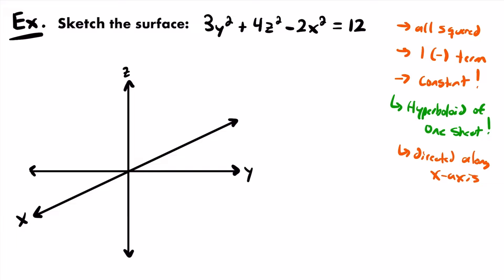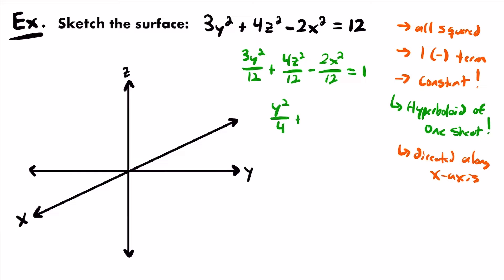To sketch this hyperboloid of 1 sheet, we get the equation in standard form by dividing both sides by 12: 3y²/12 + 4z²/12 - 2x²/12 = 1. Simplifying: 3/12 = 1/4, 4/12 = 1/3, and 2/12 = 1/6. So we get: y²/4 + z²/3 - x²/6 = 1. Now the equation is in standard form.